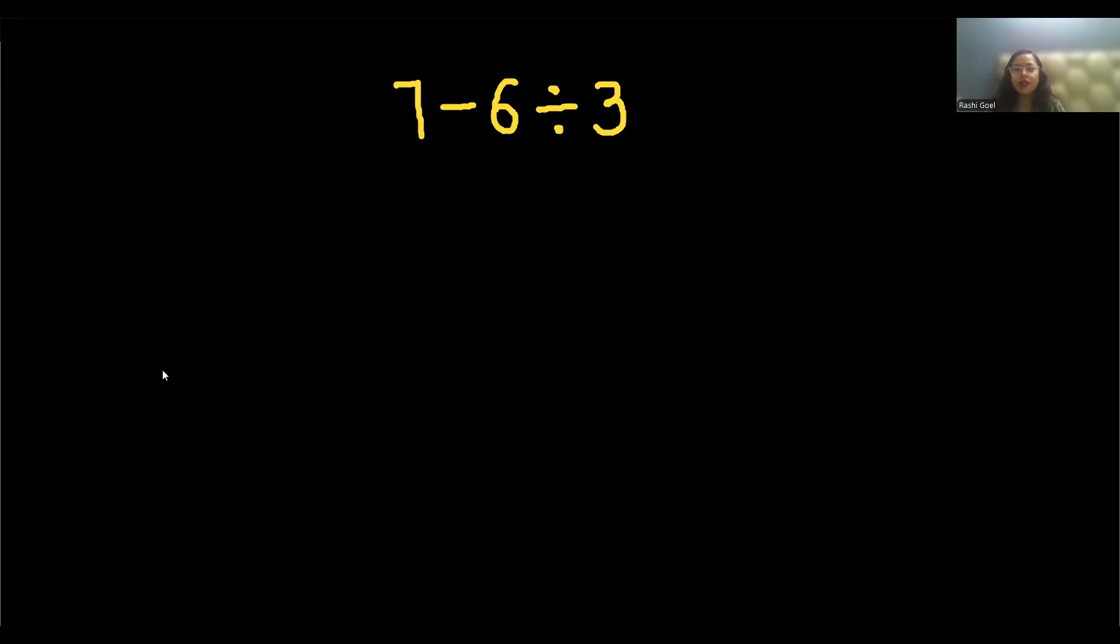Many people start solving from left to right and they solve it like this: 7 minus 6 is 1, and 1 divided by 3 is 1 by 3.